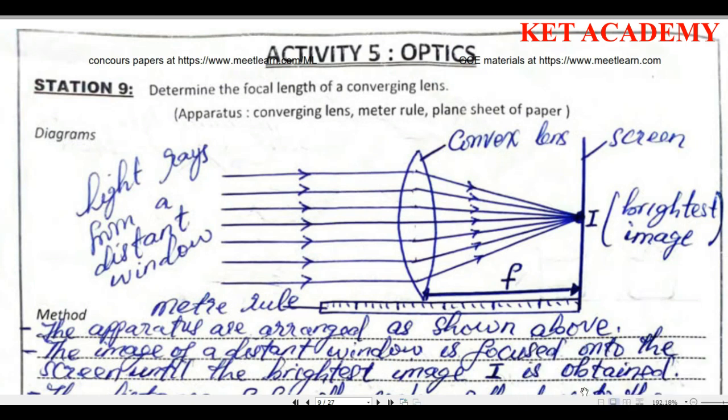Hello everyone and welcome once more to this video series on physics GCSE practicals. In today's video we are going to look at optics, and here we are asked to determine the focal length of a converging lens. A converging lens is a convex lens, as shown in this diagram.